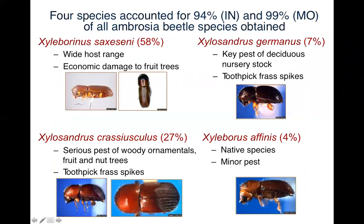Of those ambrosia beetles, 94% in Indiana and 99% in Missouri were of four species that accounted for the vast majority: Xyloborhinus saxinii, which has a wide host range and is known to cause economic damage on fruit trees; Xylosandrus germanus, which is invasive and a key pest in nursery stock; Xylosandrus crassiusculus, also invasive and a serious pest of woody ornamentals; and Xyloborhinus pini, a native species and minor pest, but collected to a lesser degree.